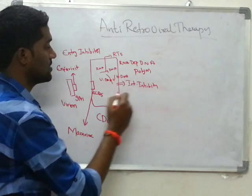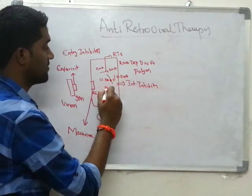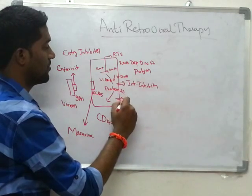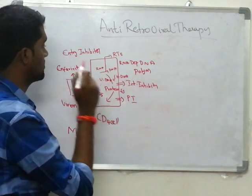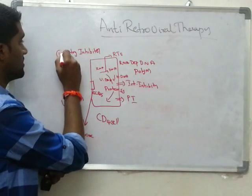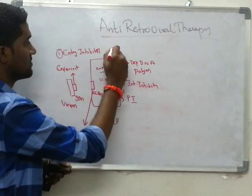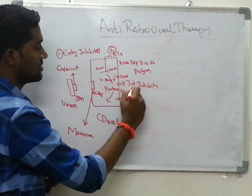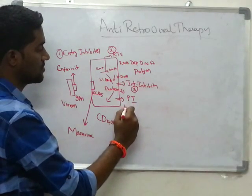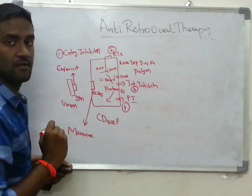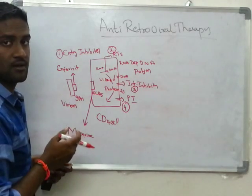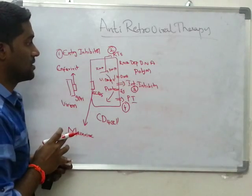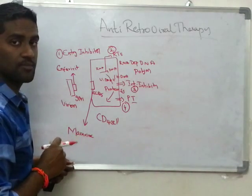During the phase of protein synthesis, protease inhibitors work. So: one is entry inhibitors, second is reverse transcriptase inhibitors, third is integrase inhibitors, and fourth is protease inhibitors. These are the currently available classes of antiretroviral therapy.